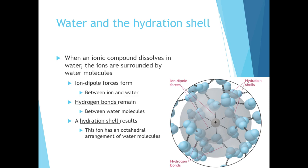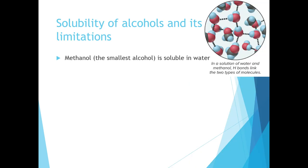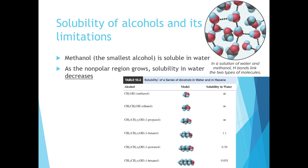This has the ion in the center with an octahedral arrangement of water molecules around the ion. We can talk about solubility of many different types of compounds and the limitations that occur with solubility. We'll start by talking about methanol, the smallest of the alcohols, and how it is soluble in water. Here we see a small molecule — methanol — with one carbon, one oxygen, and a hydrogen. It has a polar covalent bond that allows it to make hydrogen bonds with other water molecules nearby. As the nonpolar region of the molecule increases, the solubility of the substance in water decreases.